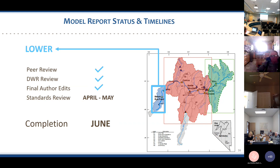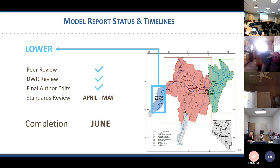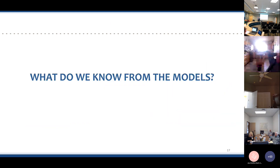The lower model covers the smallest area with the least amount of pumping, and is the core area for surface water irrigation rights near Lovelock. There are substantial surface water free rights being used and depended upon there. This model is just slightly ahead of the upper model — it's undergone all technical reviews and the authors have made their final edits. It simply needs to go through standard review, with expected completion in June.